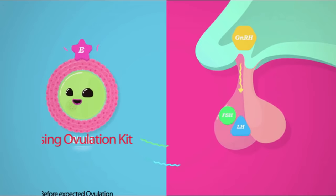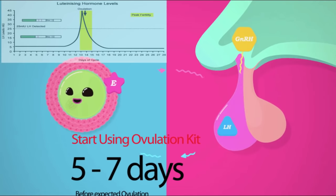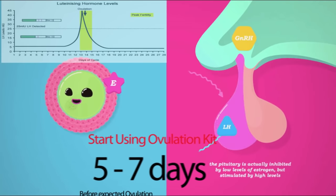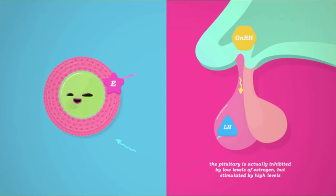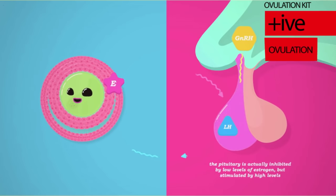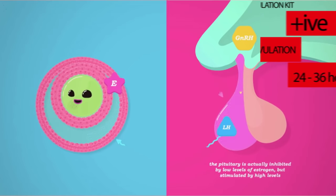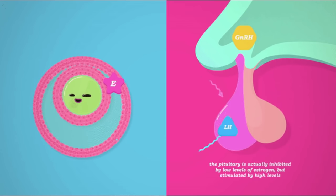You can start using the ovulation detection kit 5 to 7 days before the expected days of ovulation. If the kit returns a positive result, this indicates that ovulation will occur within 24 to 36 hours, which represents the peak fertility window.